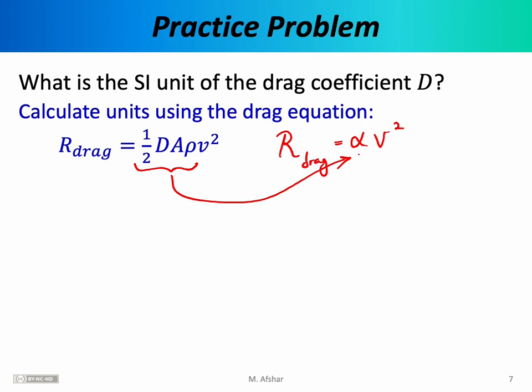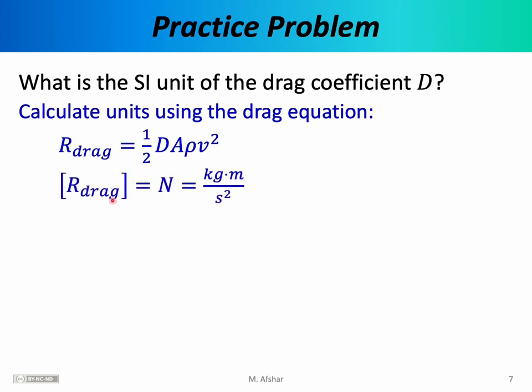When you have an equation, you want the units on the left side to match the units on the right side — both numerically and in terms of units. The left side is the drag force, and like all forces, drag is measured in newtons — that is, kilograms times meters per second squared. We express this by placing square brackets around the quantity, indicating we're interested in the unit for that quantity.